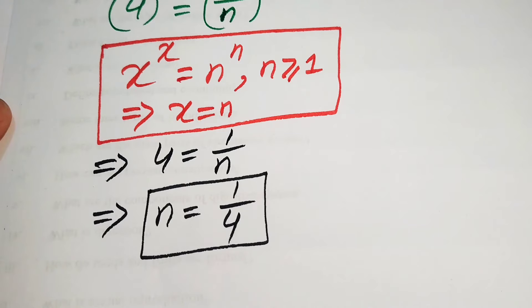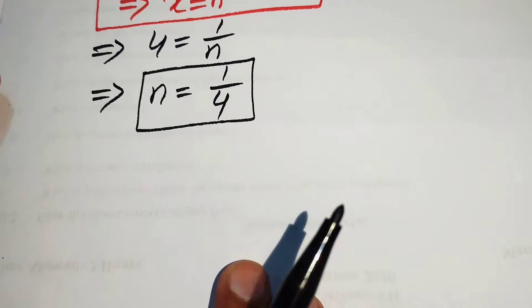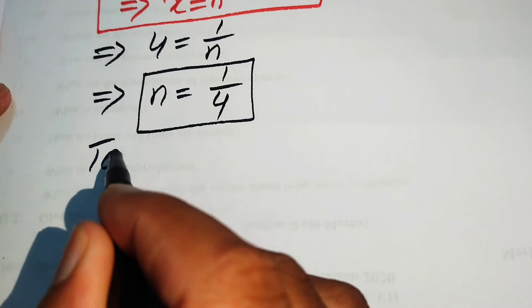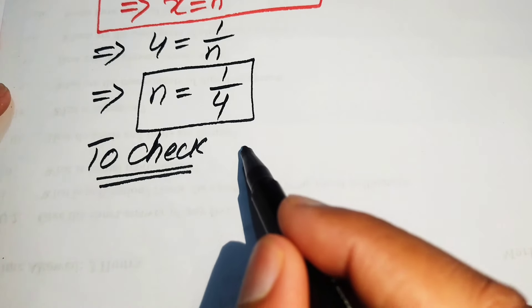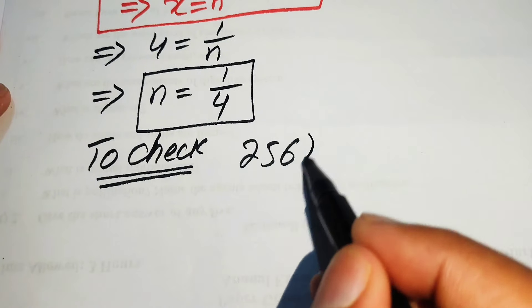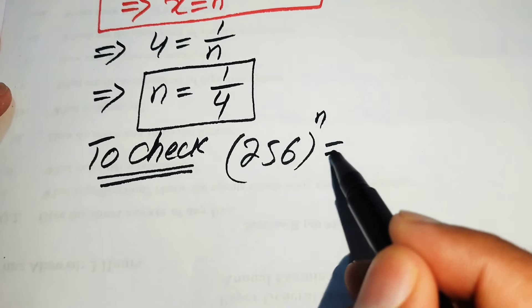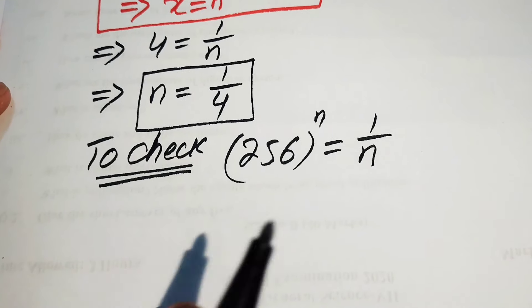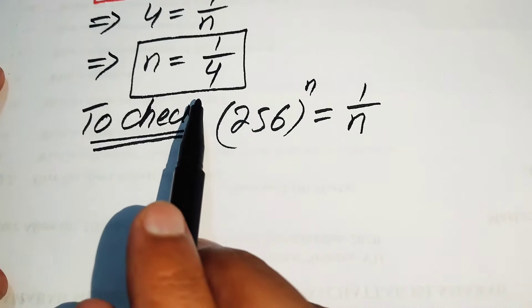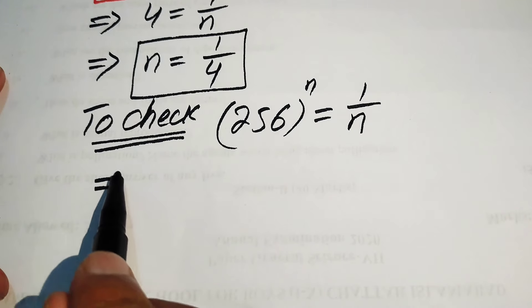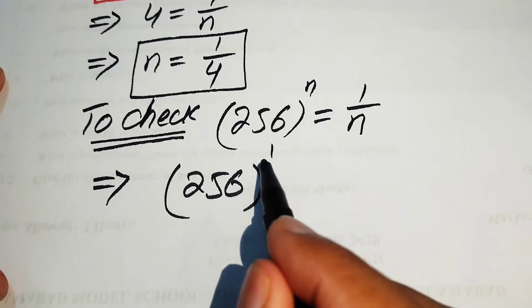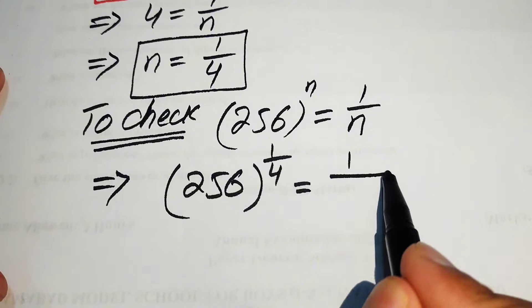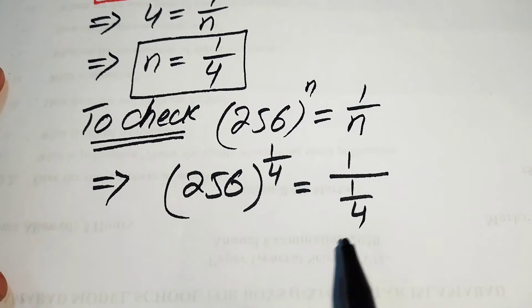So n equals 1 over 4 is our final answer. Now let's verify this value satisfies the original equation. We copy the given statement: 256 to the power of n equals 1 over n, and substitute n equals 1 over 4 on both sides, giving us 256 to the power of 1 over 4 equals 1 over (1 over 4).